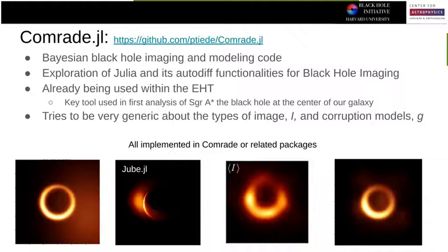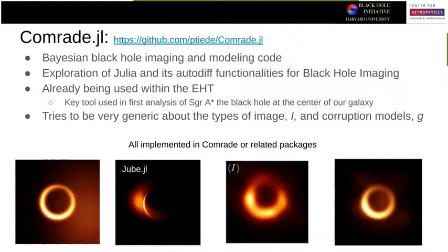So I developed a package called Comrade. It stands for Composable Modeling of Radio Emission — it is a mouthful. I aim to make the worst acronym known to man. It is a Bayesian black hole imaging and modeling code. It really tried to stress-test Julia's autodiff functionalities, and it is already being used in the EHT. It was used for the Sagittarius A* images — specifically the modeling work — and it will be in future publications.